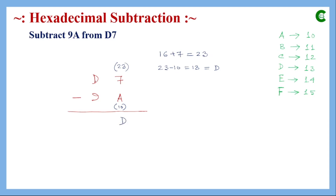Since 16 was borrowed from the next position, D is decreased by 1. D maps to 13, and 13 minus 1 is 12, which maps to C. So we subtract 9 from 12, and the final result of the subtraction D7 minus 9A is 3D.